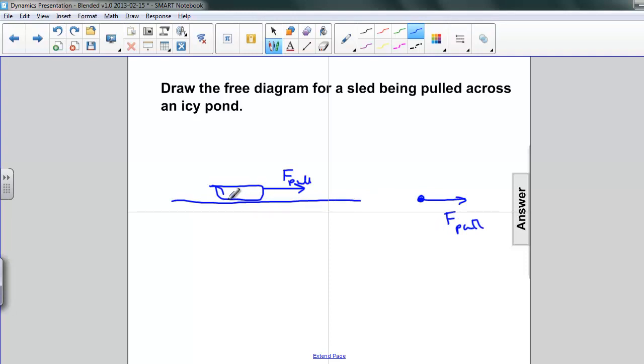But is that all? The sled is also just like the cat. It's sitting on this surface and pressing down. It has a weight. So there's a weight or a force of gravity acting also on the sled.